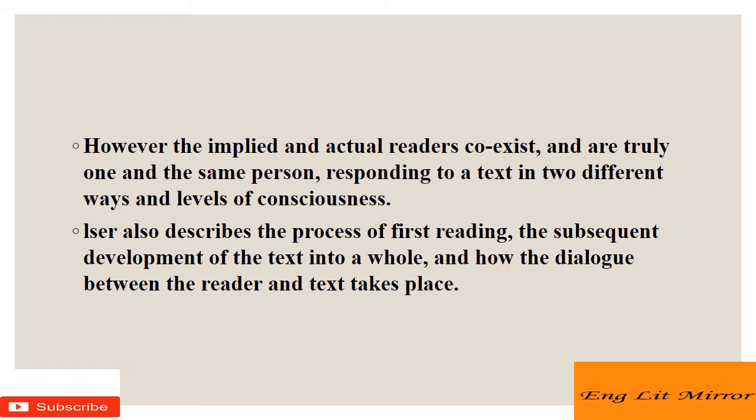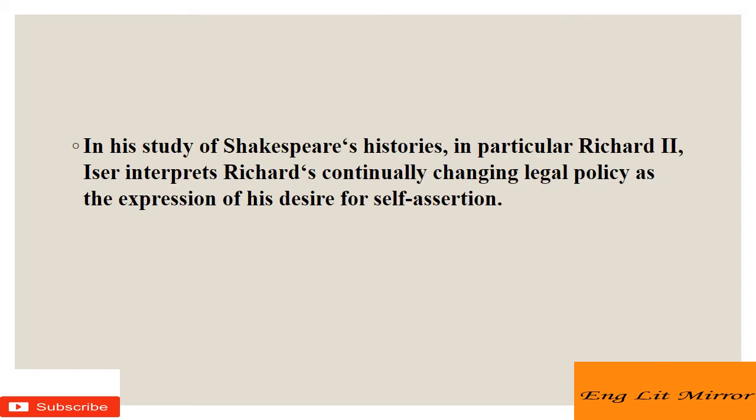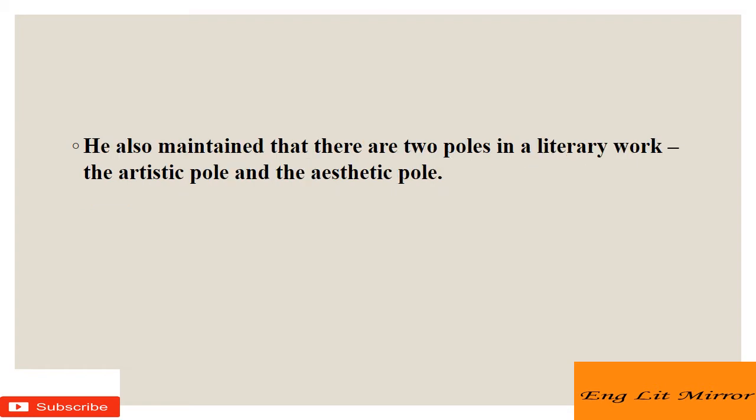Iser also describes the process of first reading, the subsequent development of the text into a whole, and how the dialogue between the reader and text takes place. In his study of Shakespeare's histories, in particular Richard II, Iser interprets Richard's continually changing legal policy as the expression of his desire for self-assertion, following Hans Blumenberg and attempting to apply his theory of modernity to Shakespeare. He also maintains that there are two poles in a literary work: the artistic pole, the text created by the author, and the aesthetic pole, the realization accomplished by the reader.